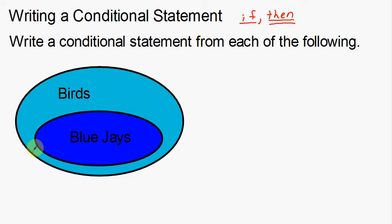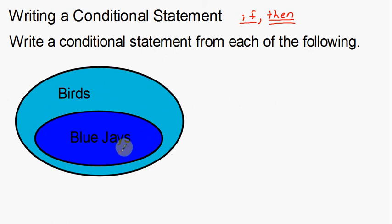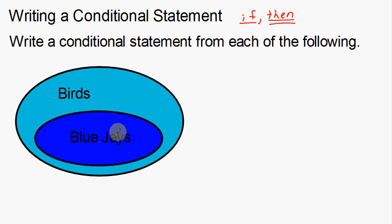If you understand what a Venn diagram is trying to tell you, it tells you that blue jays are birds, but birds don't necessarily have to be blue jays. All of my population of blue jays are birds, but parts of my birds — this piece here, this piece over here — they are not blue jays.